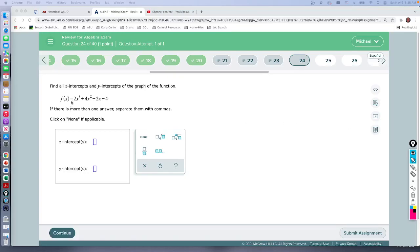For question 24 we're given a polynomial function. We're asked to find the x-intercepts and the y-intercepts and we aren't given a calculator so I'm going to show you how to do it without a calculator.